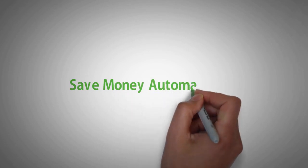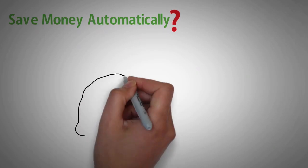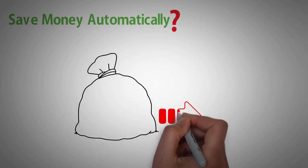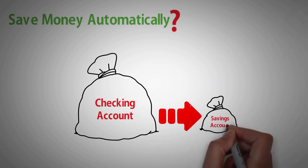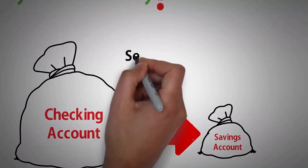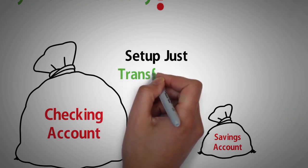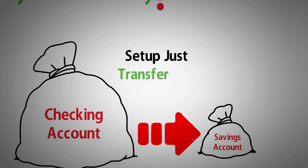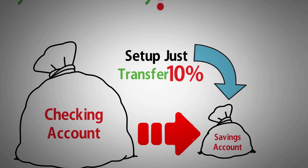Save money automatically. Did you know that you can save money without thinking about it? Yeah, you can set up your bank account to automatically transfer funds from your checking account into a savings account every month. If that sounds scary to you, you can also set up your direct deposit to automatically transfer 10% of each paycheck into your savings account. Pretty nice, right?